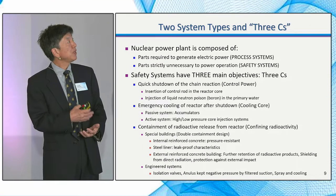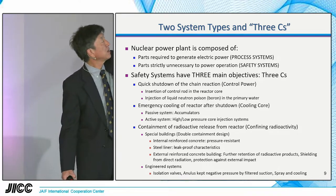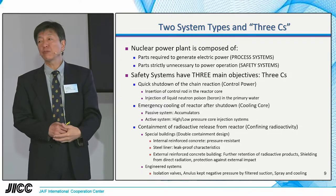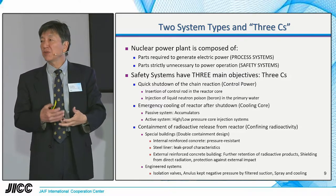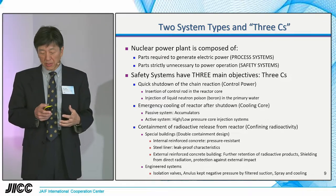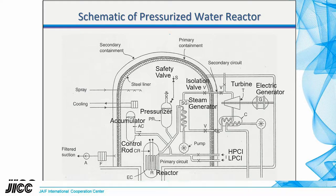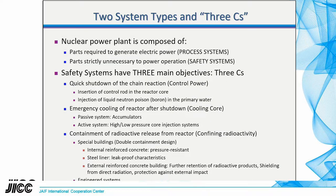The nuclear power plant is mostly composed of two types of systems. One is the process system — parts required to generate electric power; this is sufficient to generate electricity. However, nuclear power plants have many other systems. The reactor vessel and reactor core are important for power generation. Turbine, steam generator, primary and secondary systems are needed. But why do we have a containment vessel? This is the second type: parts strictly unnecessary for power operation — the safety system. In a nuclear system, the safety system has three main objectives: the three Cs.